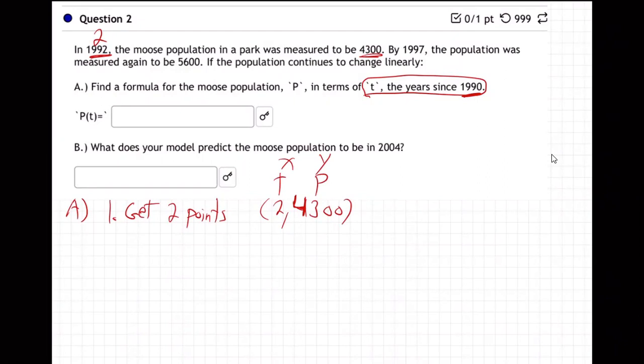I don't know how to say plural. What is the plural for moose? Mooses? I don't know. And then 1997, 5,600. So there's our two points.